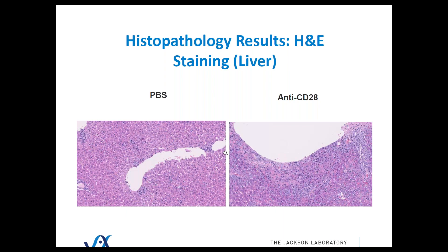This is H&E staining of the liver. PBS is on the left and anti-CD28 on the right. As you can see, we have significant immune cell infiltration in the liver with this therapeutic. We see the same thing with TGN1412 and OKT3.